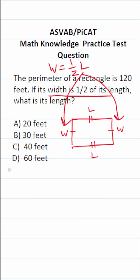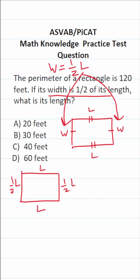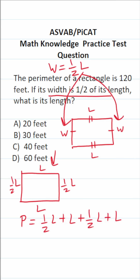If it's helpful, you can make a new diagram quickly. The two widths each become one half length, and the two lengths remain just length. Again, how do you find the perimeter of a rectangle? You add up all of its sides. So the perimeter is one half L plus L plus one half L plus L.